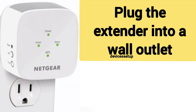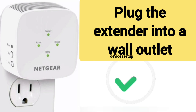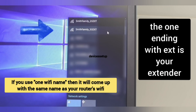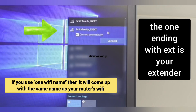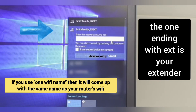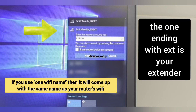First and foremost, plug your extender into a wall outlet and wait for its power LED to turn stable. Then connect your computer or laptop to the extender's network name showing up in your Wi-Fi list.